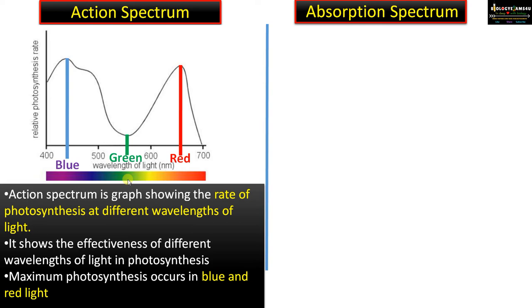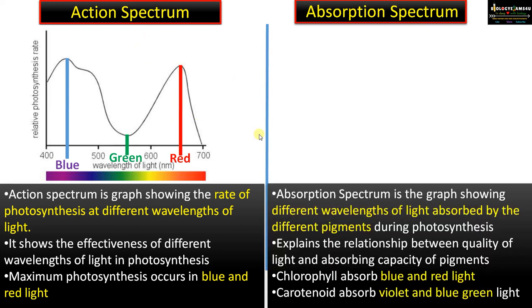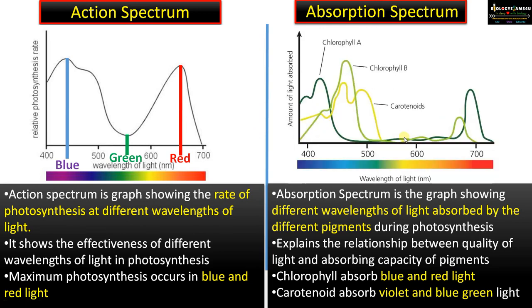So, action spectrum shows the effectiveness of different wavelengths of light on photosynthesis - maximum photosynthesis occurs in blue and red light. Absorption spectrum is a graph showing the absorption of different wavelengths of light by different pigments during photosynthesis.